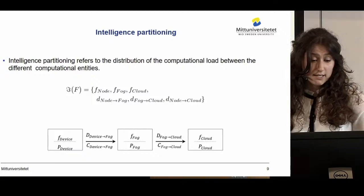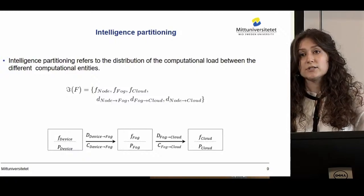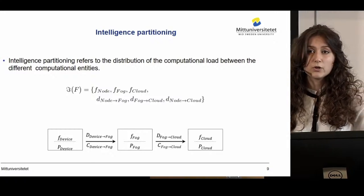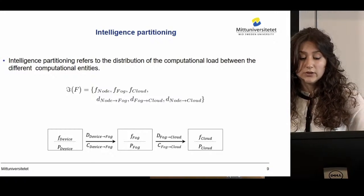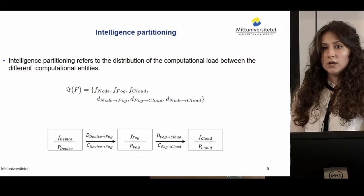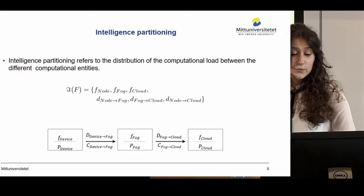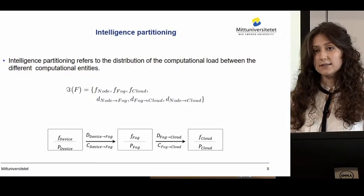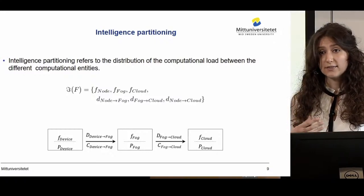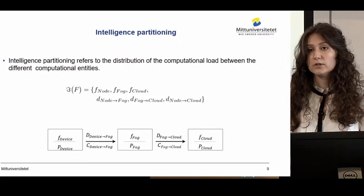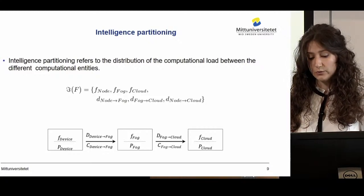To address this, we designed a method called intelligence partitioning, which refers to the distribution of the computational load between different computational entities. In our analysis, we consider three computational entities — the node, the fog, and the cloud — and also the intermediate data volume transferred between these entities.